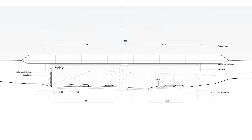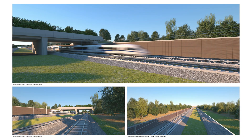School Hill Green Overbridge is the last structure on this section. This is a wider bridge, as it has to incorporate HS2's tracks — one of which is for the maintenance depot — and to the right are the network rail lines. Here are some artists' impressions of how the bridge will look.